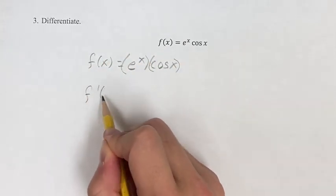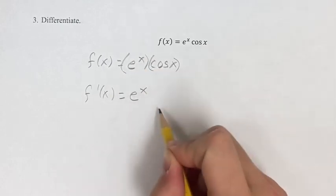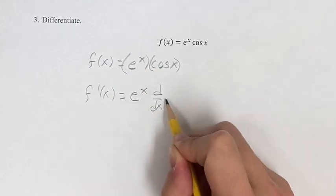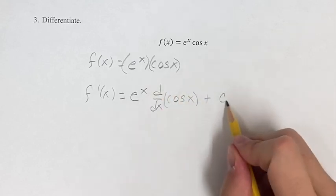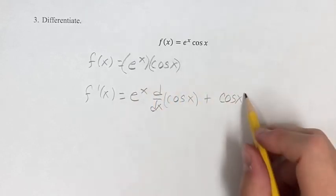So our derivative is going to be the first, e to the x, times the derivative of the second, cosine x, plus the second, cosine x, times the derivative of the first.